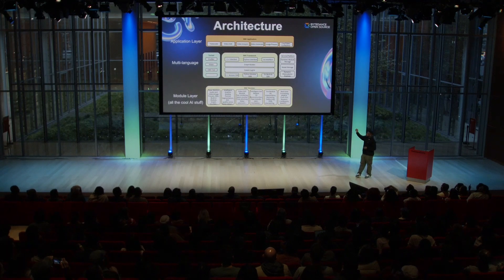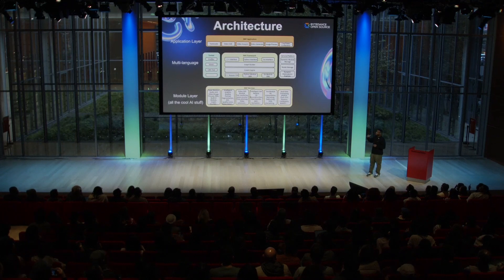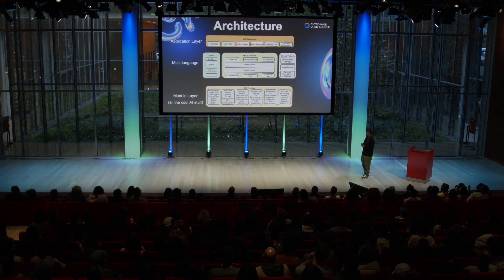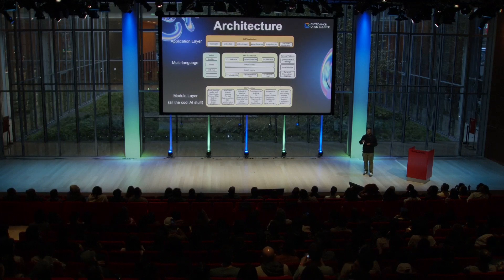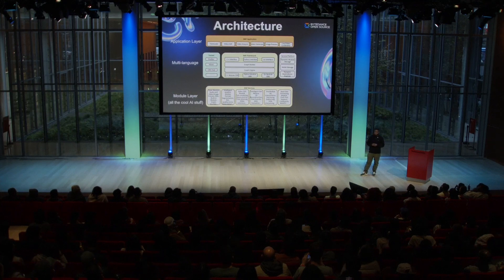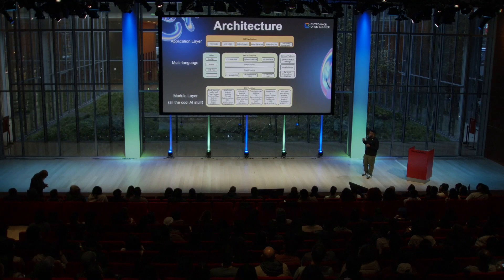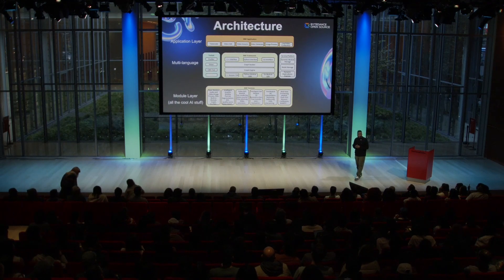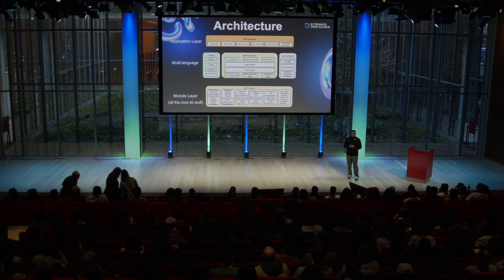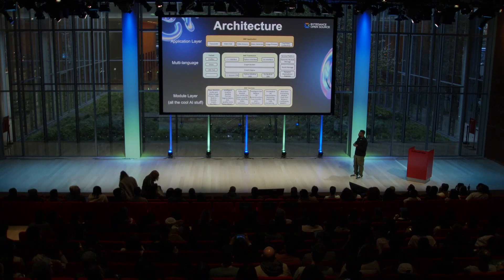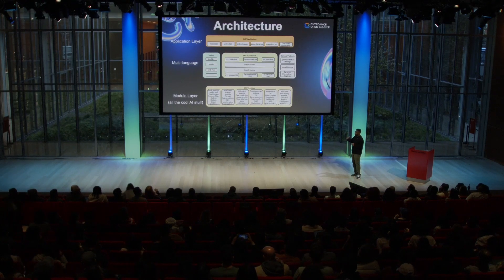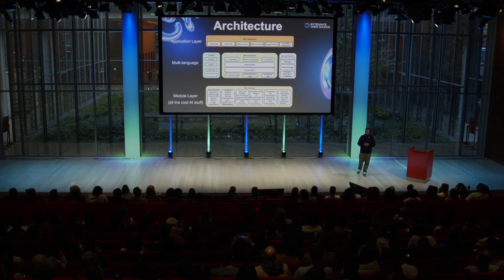In the application layer at the top, there's support for a diverse range of requirements like transcoding a video, video analysis, live streaming, and video conferencing. And to fulfill these needs, the underlying module layer is where all the cool stuff in AI happens. It's efficient for staff segmentation, video rendering, and 3D reconstruction, all organized in distinct modules. Picture when you're on TikTok Live and you see filters and other effects show up — that's this layer at work.